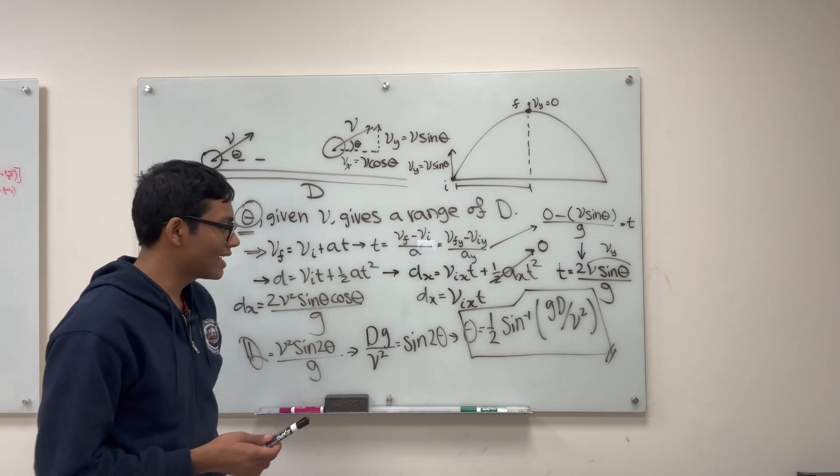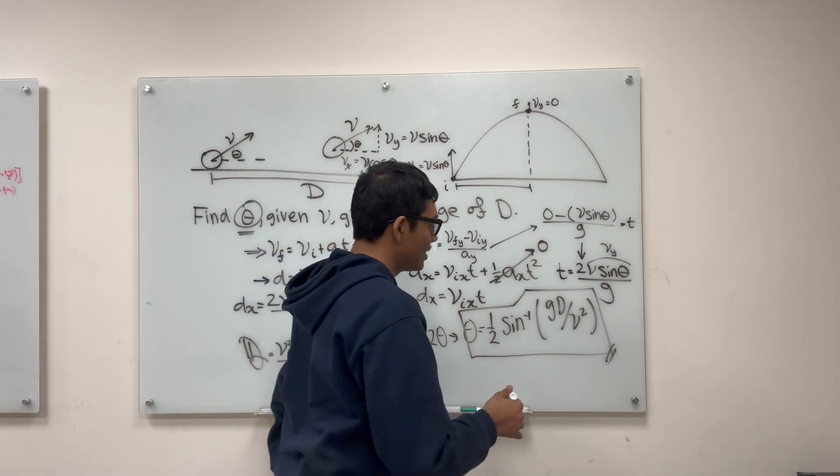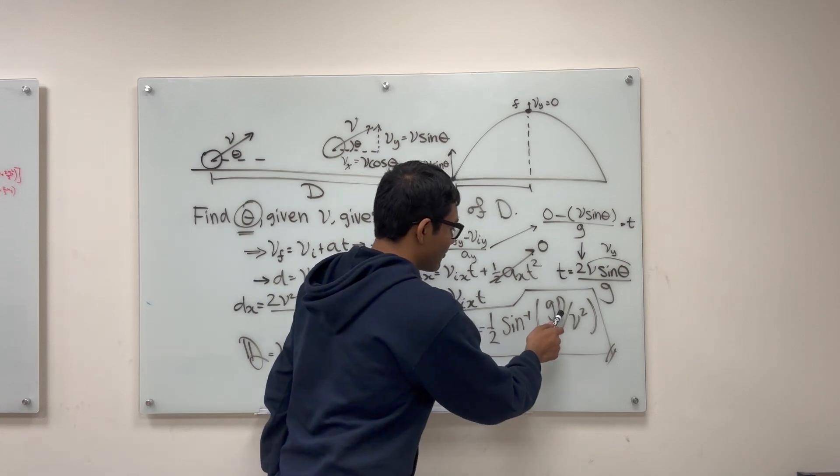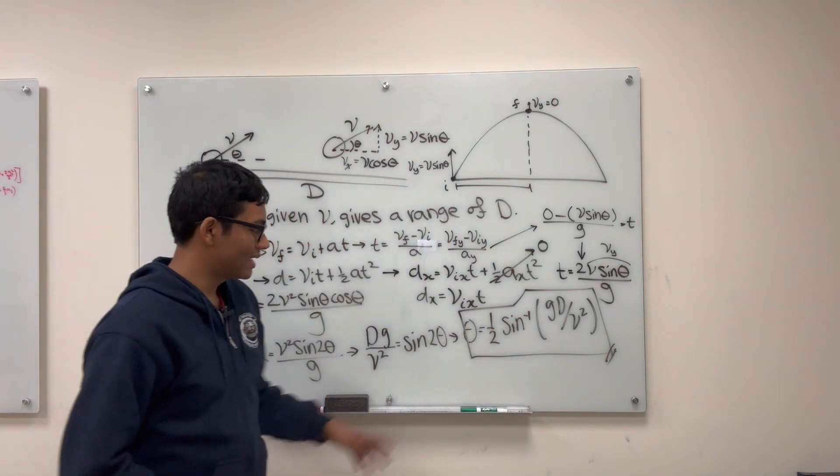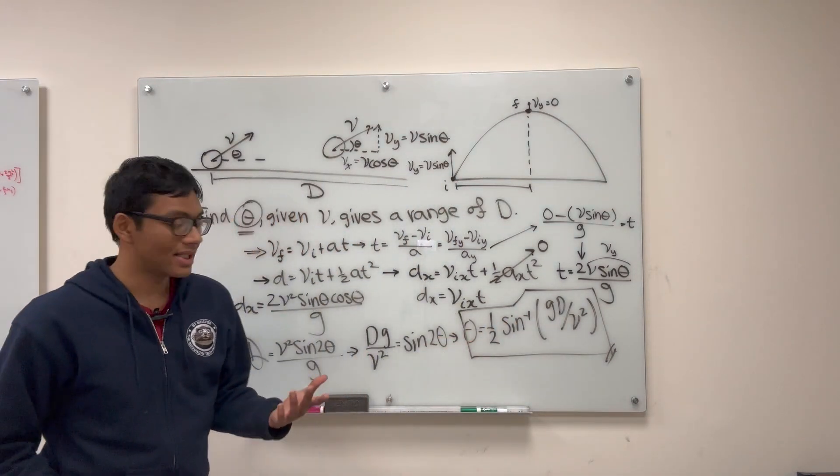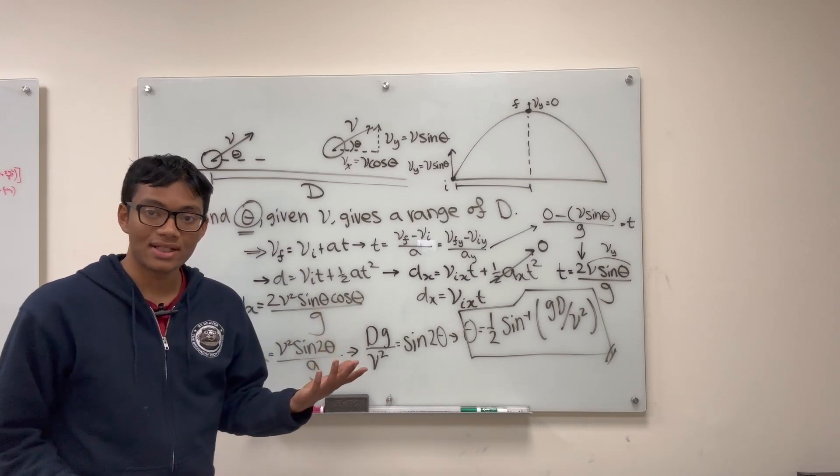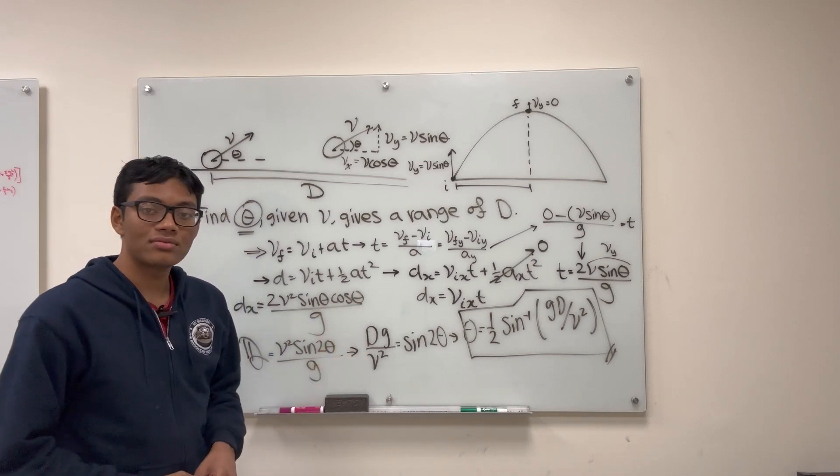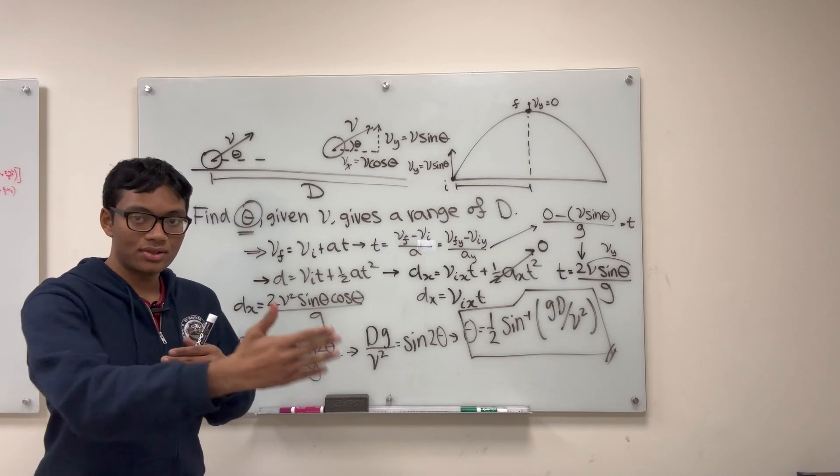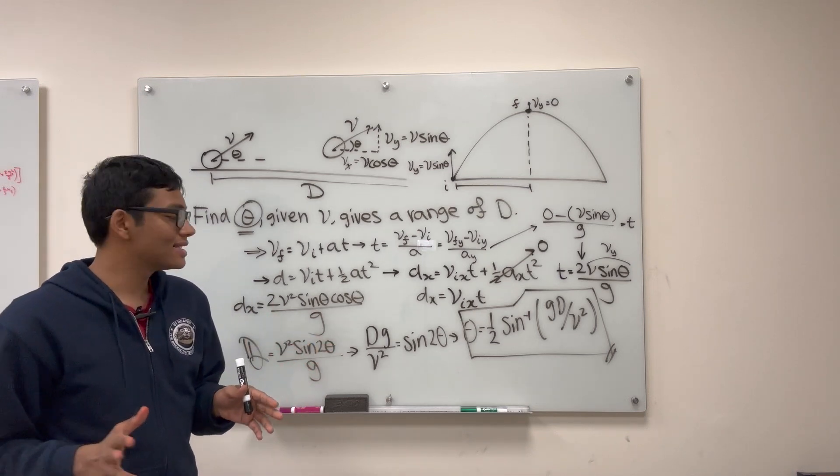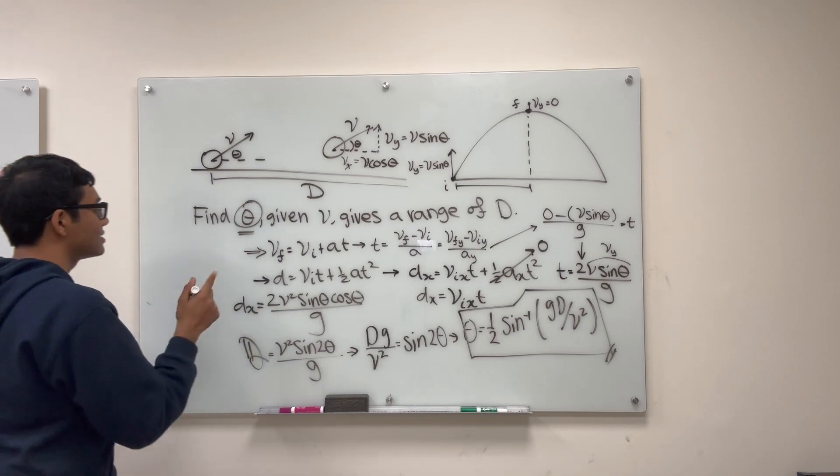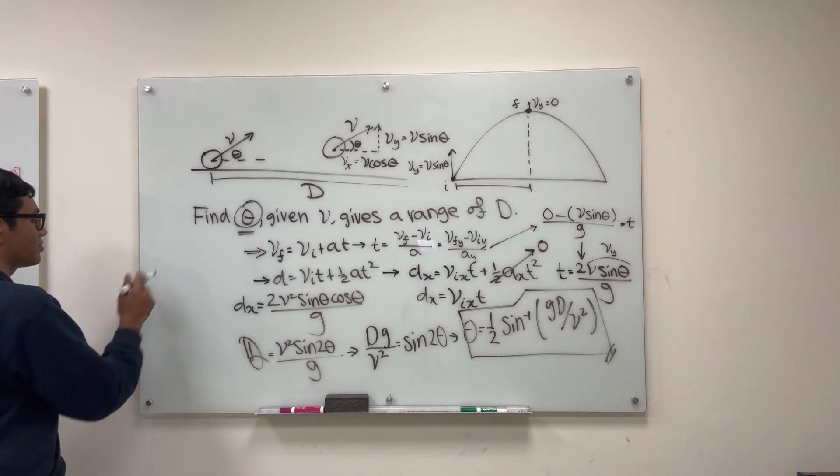So now let's just do a quick sanity check and make sure this makes sense. So if we have a greater range, what does that do to our theta? Well, you would think that theta would just increase, right? If you were required to hit a greater range. But that's not necessarily the case because a higher theta does not necessarily mean a greater range, right?